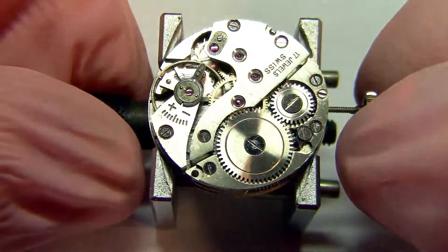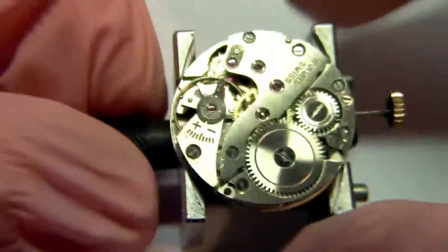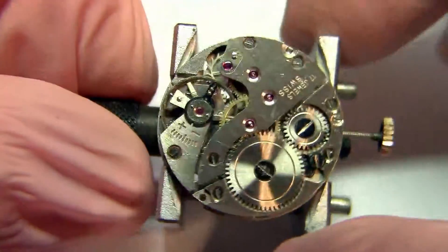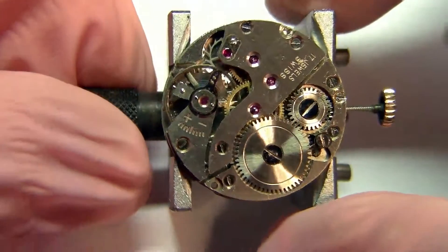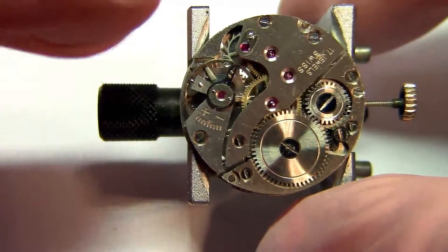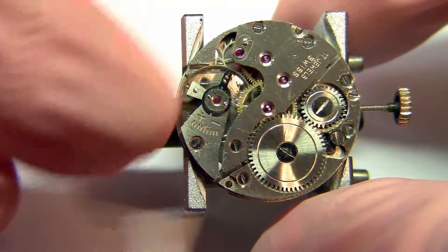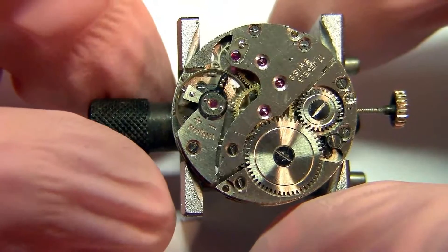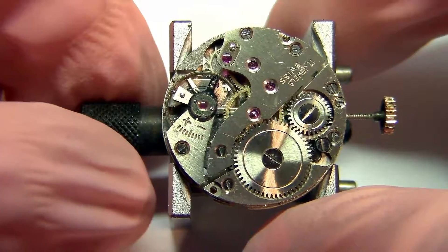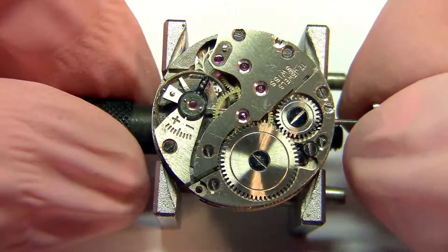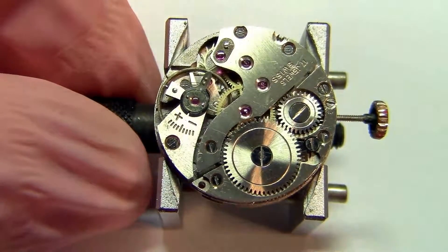And as you can see here, it's completely stopped because the mainspring is completely unwound. And even if I shake it a little bit, you can see that it tries to keep moving, but it stops right away. Even if I move the balance wheel with my finger, it tries to keep moving, but it's only doing this back and forth movement because of the action of the hairspring, which is that small spring in a spiral shape that is connected directly to the balance wheel.